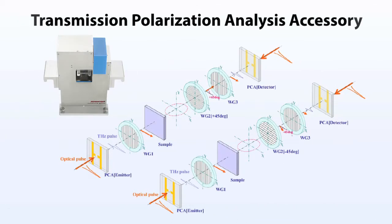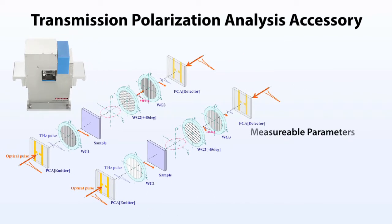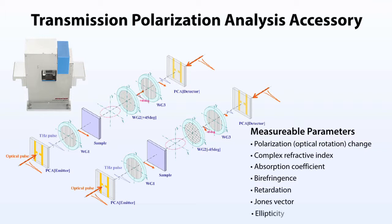The transmission polarization accessory uses a series of three linear polarizers to read out optical rotation angles. The first and the third polarizers are set to the polarization plane of the initial terahertz pulse. Optical rotation is measured by combining two sets of data obtained with plus 45 degree and minus 45 degree settings of the second polarizer.